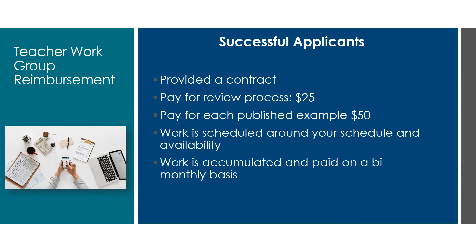Regarding teacher work group reimbursement — successful applicants are provided a contract. We pay $25 for the review process and $50 for each published example. Work is scheduled around your availability, and work is accumulated and paid out on a bi-monthly basis. The work you do within a two-month or eight-week period is then processed, and you will receive a check for that work.